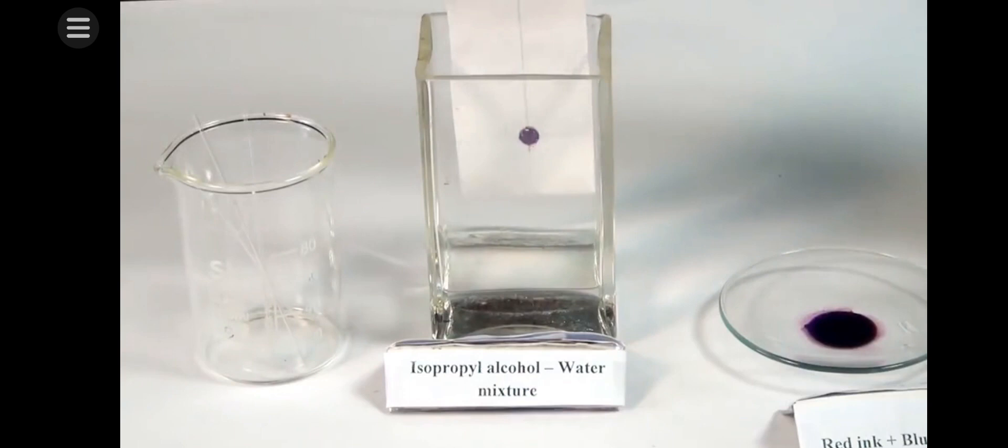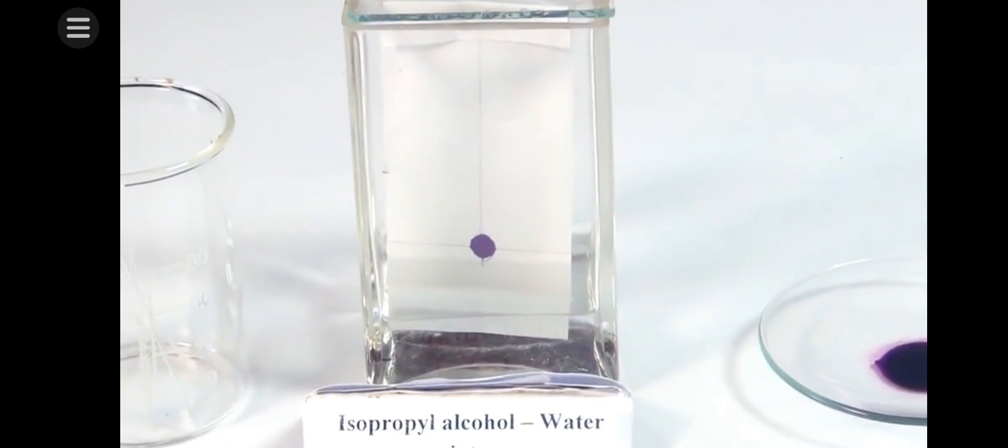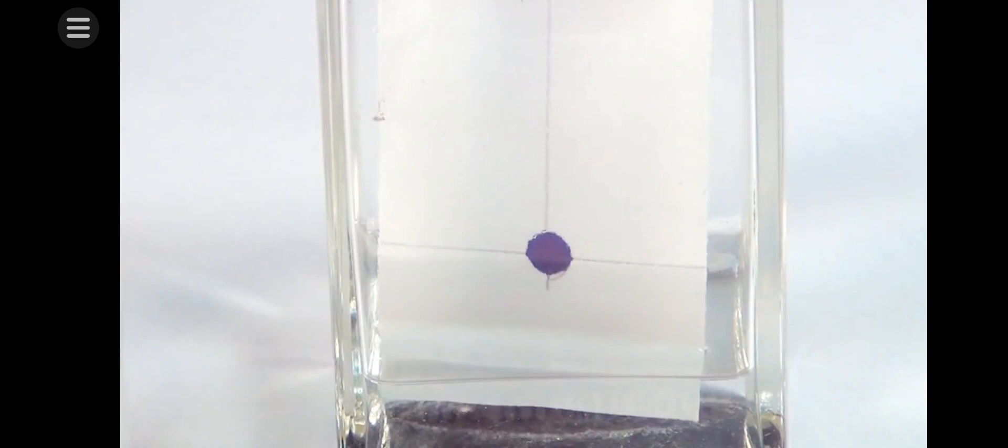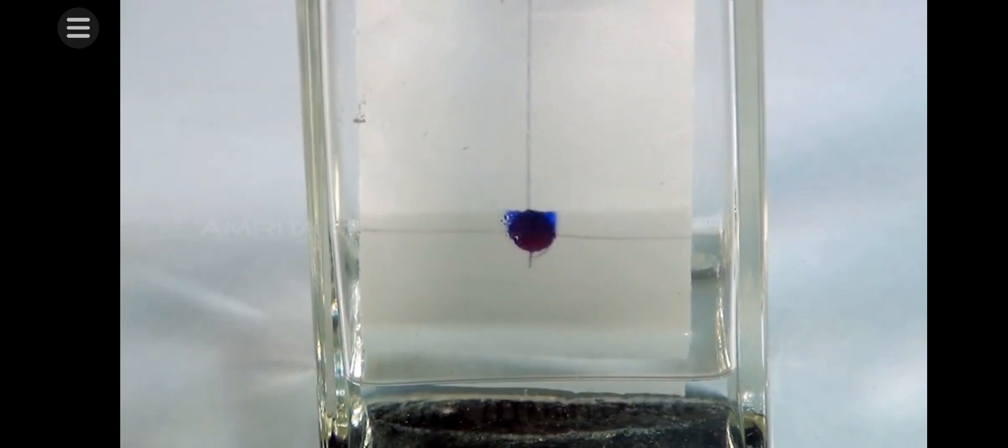Take a piece of thread and tie the filter paper to it. Suspend the filter paper vertically in the chromatographic chamber containing solvent which is a mixture of isopropyl alcohol and distilled water. Make sure that the pencil line remains about 1 cm above the solvent level.